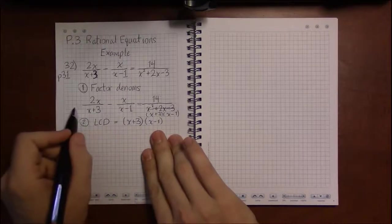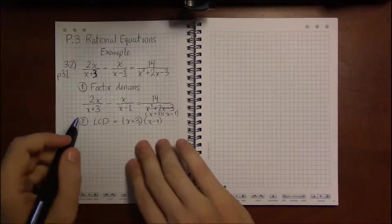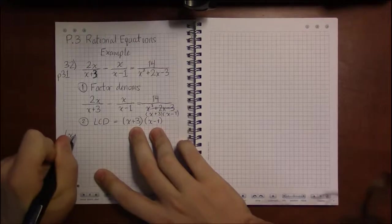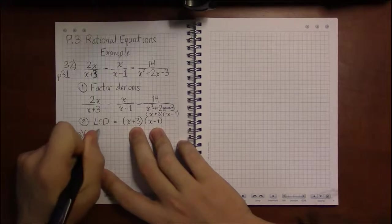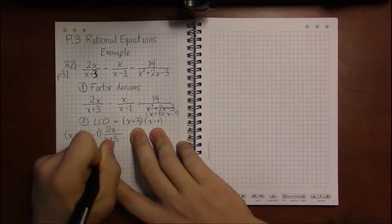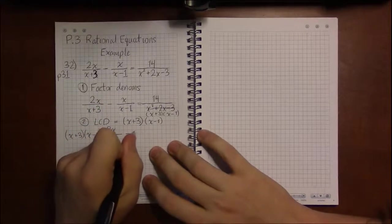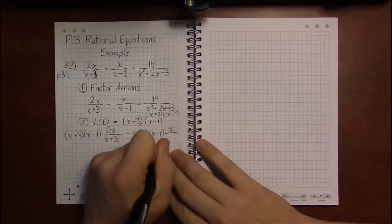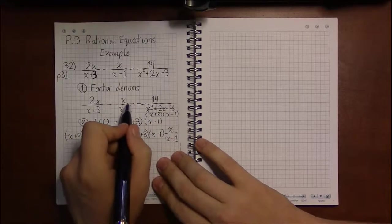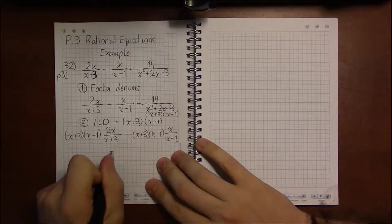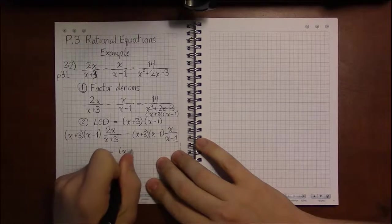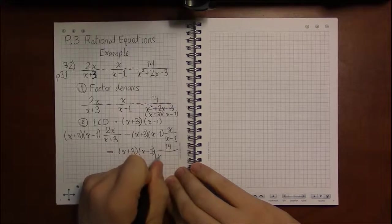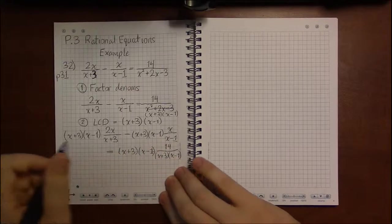So we're going to multiply everything, the left side, everything on the left, and everything on the right, by the LCD. So when we do that, multiplying on the left, the first term gets multiplied by the LCD. So it's x plus 3 times x minus 1 times 2x over x plus 3. But we also multiply the second term. So it's going to be a minus, then the LCD, x plus 3, times x minus 1, times x over x minus 1. So we have the LCD times the first term, the LCD times the second term. Now we just take the LCD and multiply it by the third term, the right-hand side of the equation. x plus 3 times x minus 1, and that's going to be multiplying 14 over x plus 3 times x minus 1.